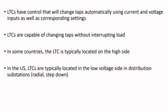LTCs have controls that will change the taps automatically using current and voltage. You have a PT — a potential transformer or voltage transformer — that steps the voltage down, and the LTC control takes that voltage. You also have a CT that steps the current down, and the LTC takes both signals. With the appropriate settings, it controls the tap change automatically.